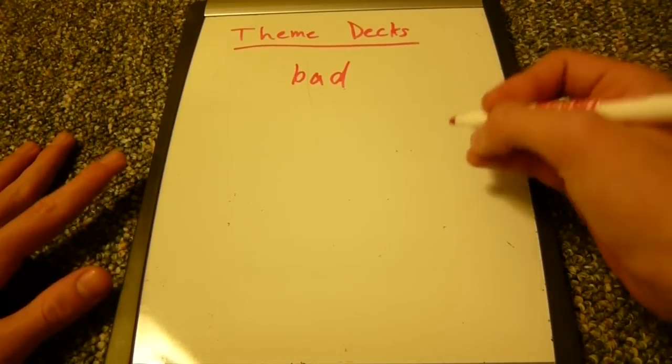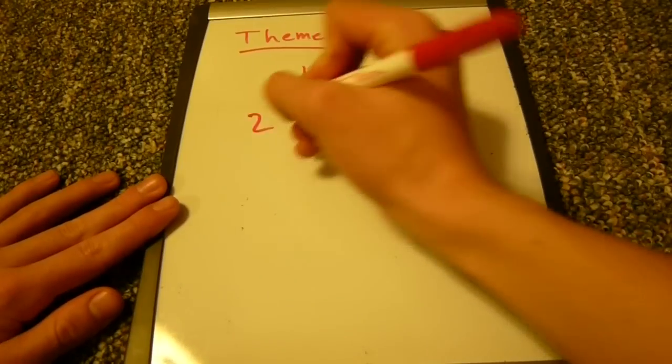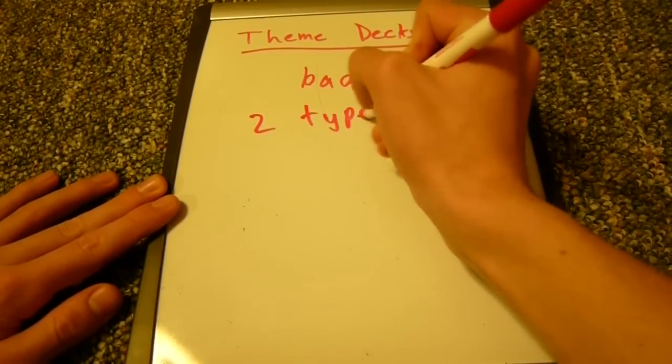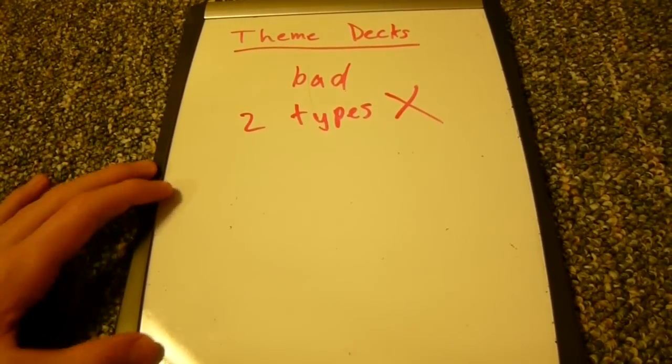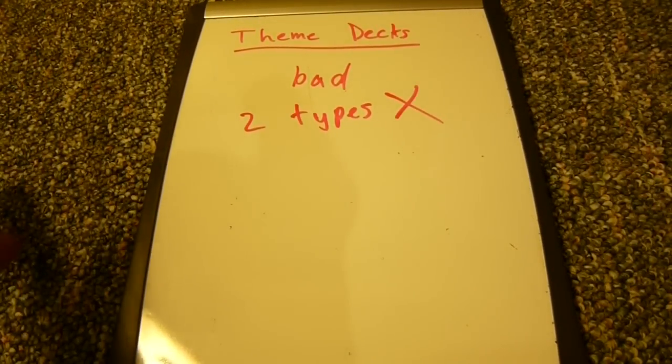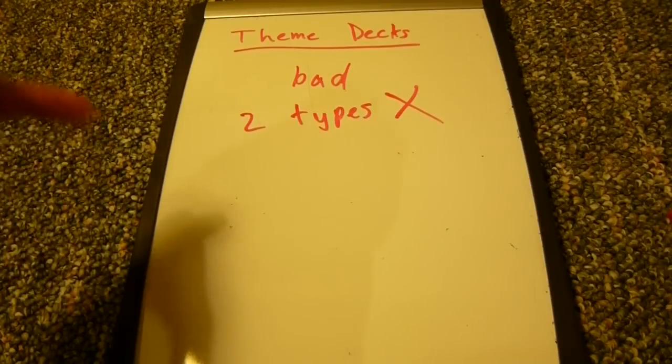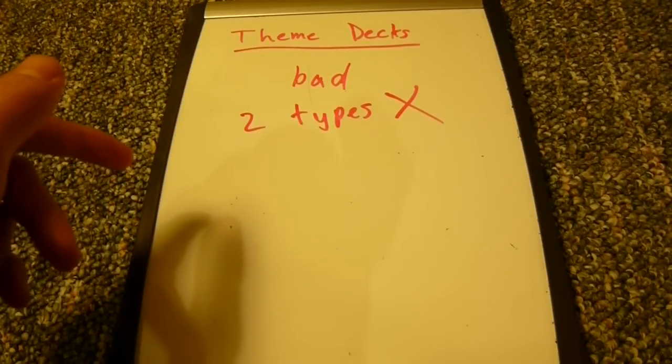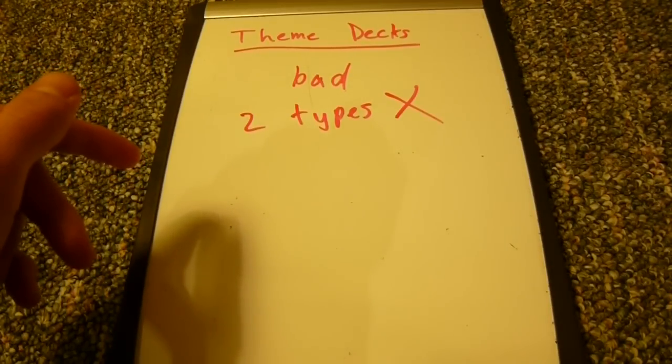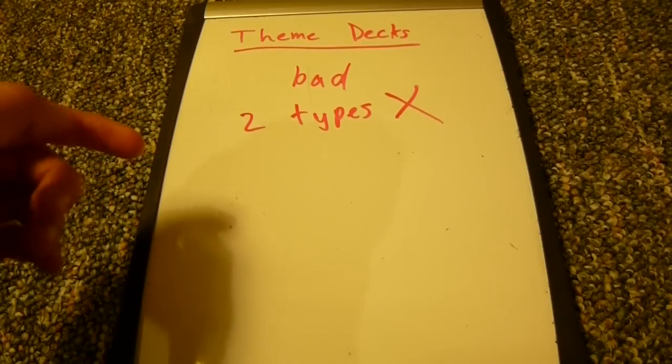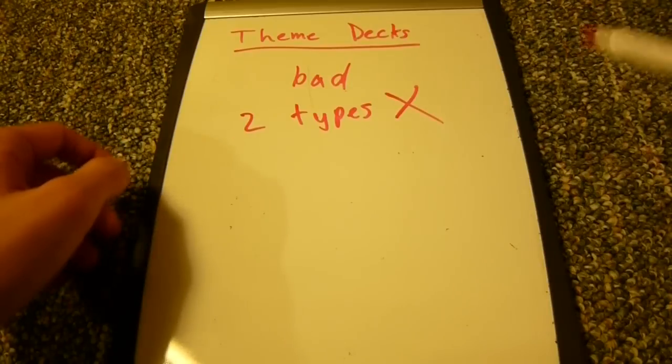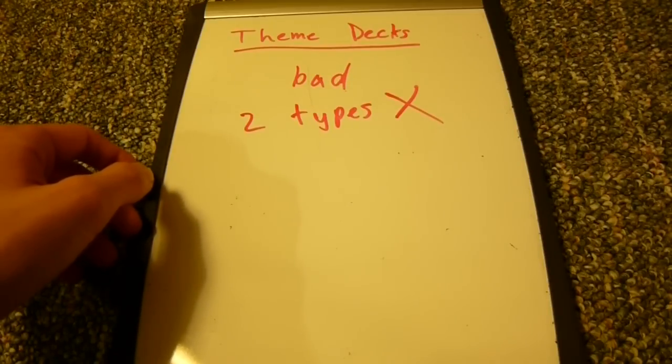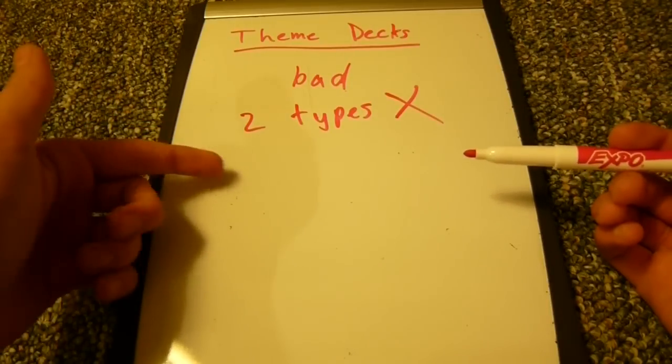What theme decks like to do is they'll almost always have two types. This already is a wrong approach. What this means is they basically make two theme decks, sometimes three, but usually two for every single new set they release. And so, what they do is they'll toss in two types, and just a couple Pokemon from the set of those types to fit that. And then they'll have a decent amount of energy and whatnot. But this is bad, because it means the deck lacks a strategy.